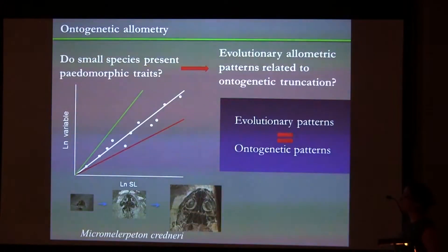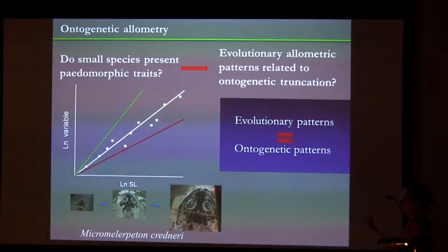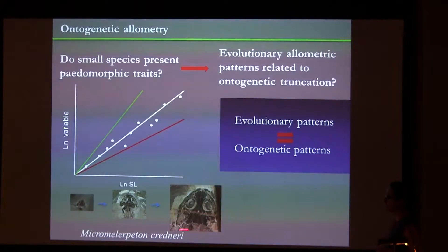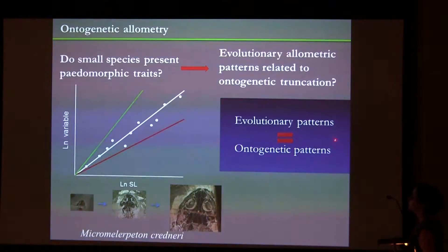To test whether these structures were pedomorphic, I used the same variables to calculate the ontogenetic allometry in a basal disorophoid, Micromelerpeton credneri, which has a good fossil record. Under pedomorphosis, I expected a match between evolutionary allometry patterns and ontogenetic patterns.